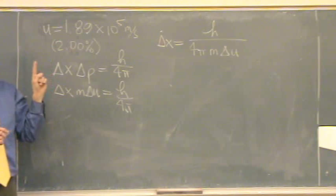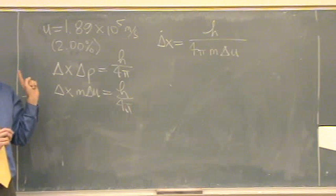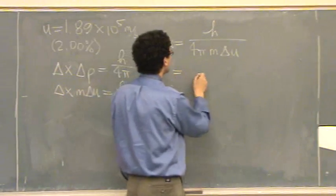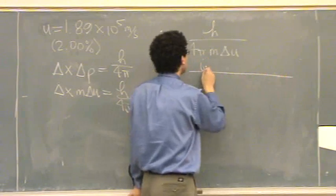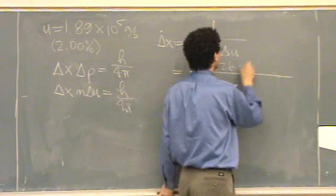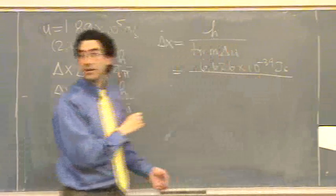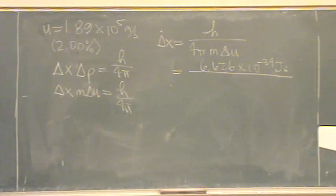The mass is given on the back of the exam, and that's the mass of electrons. Okay? So, you should see it on the last page. H is 6.626 times 10 to the minus 34 joule seconds. That's given on the back of the exam.